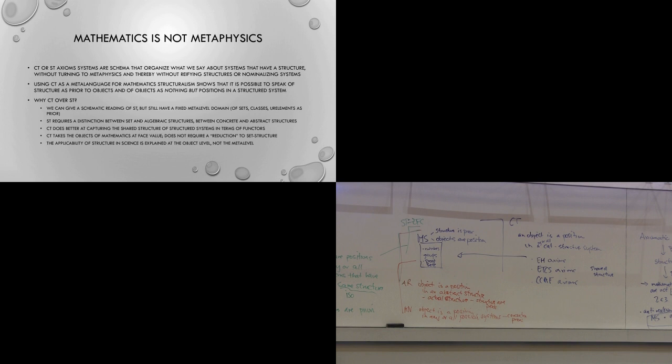Category theory takes the objects of mathematics at face value. Whether we're looking at numbers or groups or proofs or sets, we don't have to effect a reduction of those to sets to talk about their structure — there's no reductive element when you talk about category theory. And finally, the applicability of structure in science is explained at the object level, not the meta-level.